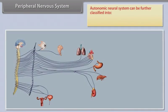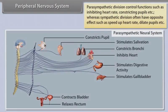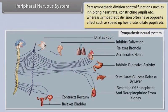The autonomic neural system can be further classified into the parasympathetic neural system and the sympathetic neural system. The parasympathetic division controls functions such as inhibiting heart rate and constricting pupils, whereas the sympathetic division often has the opposite effect, such as speeding up heart rate and dilating pupils.